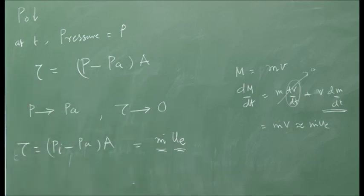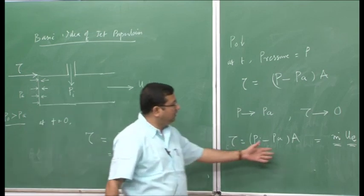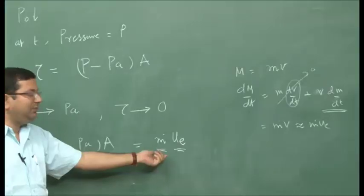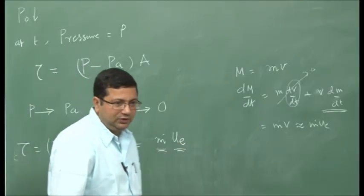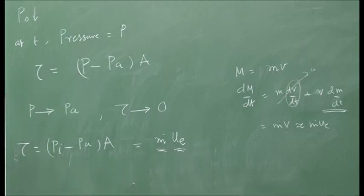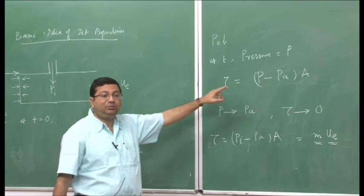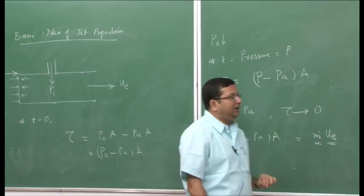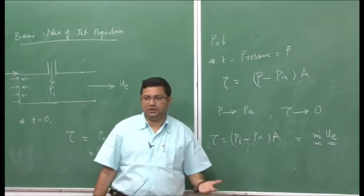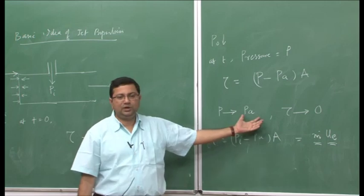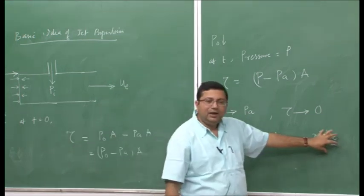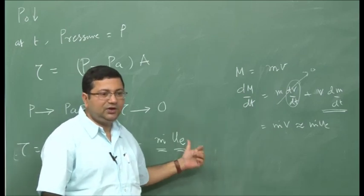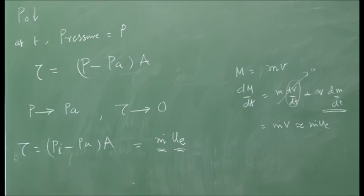Roughly speaking, the thrust produced essentially depends on the pressure differential, which can be represented as the product of mass flow rate and exit velocity. The primary function is to maintain this high pressure. This is applicable to any type of jet engine, whether rocket or gas turbine. That is why the nozzle becomes a very important component, because the exit velocity u_e is produced by the nozzle.